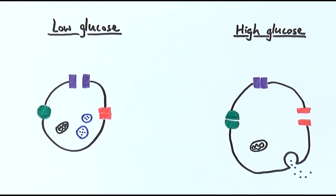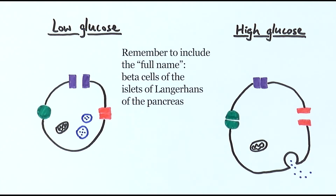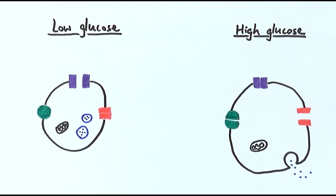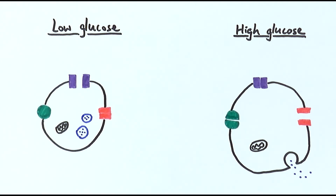In this video we'll be looking at the control of insulin secretion by the beta cells. Insulin is a hormone released by the beta cells and they can decrease our blood glucose level after a meal or any situation that leads to a high blood glucose level. The beta cells detect the high levels of glucose in the bloodstream and then secrete the hormone depending on how much glucose there is.